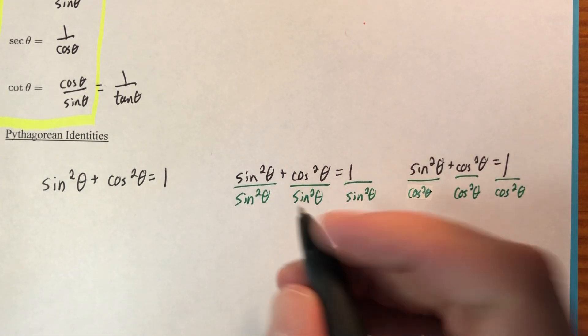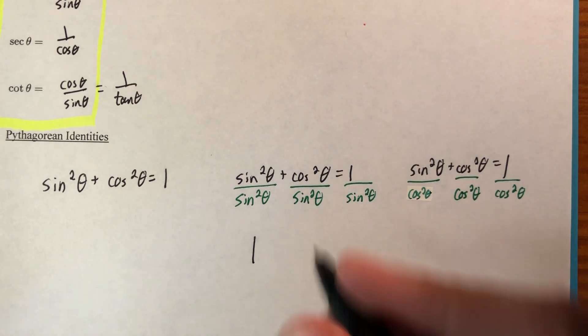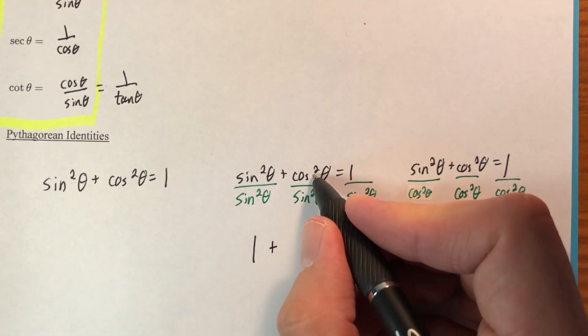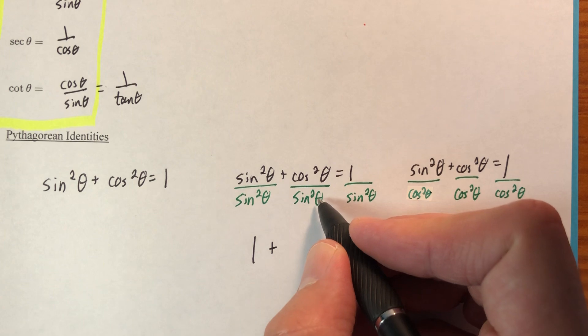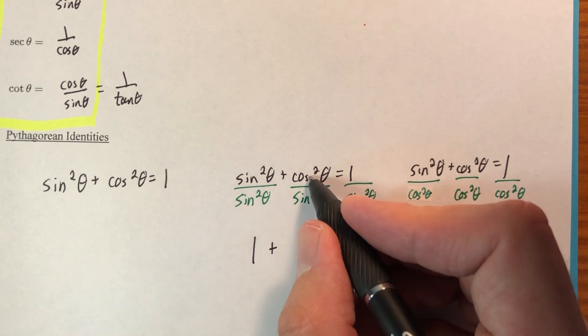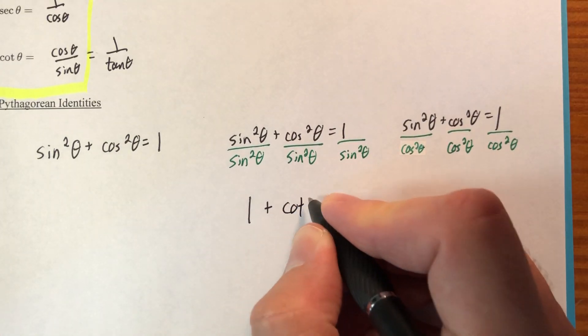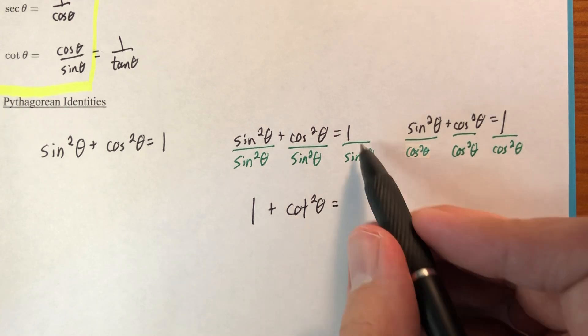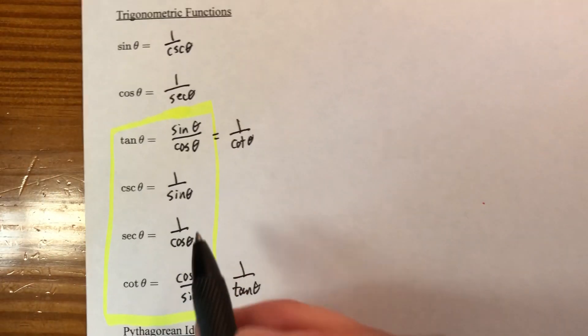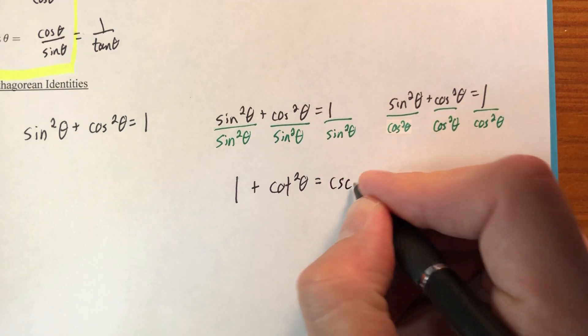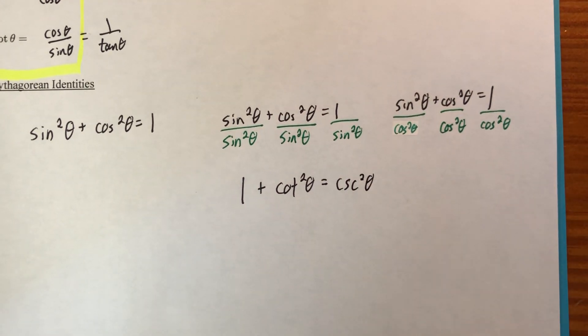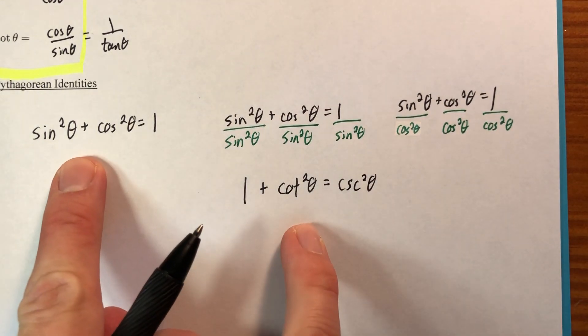Sine squared divided by sine squared. Oh, that's just one. I've got that. Cosine squared divided by sine squared. Let's ignore the squares for just a second. Let's just pretend like this said cosine over sine. Cosine over sine is cotangent. So one plus cotangent, it's squared though, is equal to, okay, one over sine, one over sine is cosecant. It was squared, but it's cosecant squared. So, so far we have two Pythagorean identities.